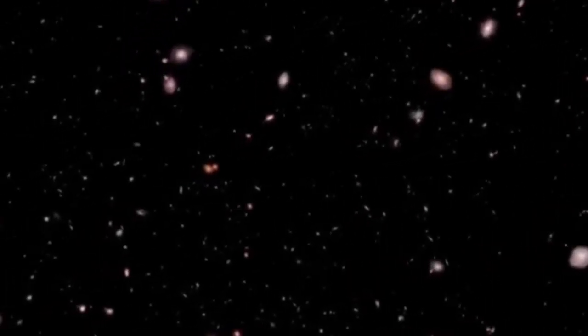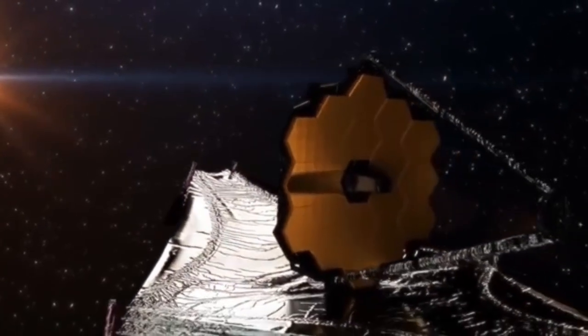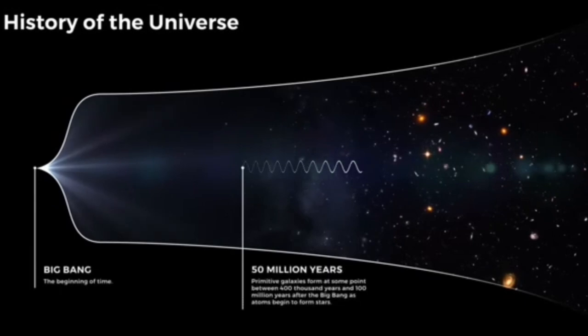But here's the impossible part. It's too massive, too bright, and too evolved to have formed so soon after the Big Bang. By our current theories, there simply wasn't enough time or matter to form galaxies like this in the early universe. And yet, here it is. And it's not alone.